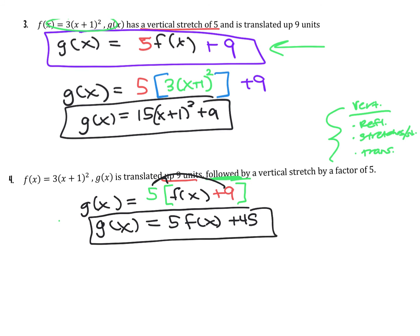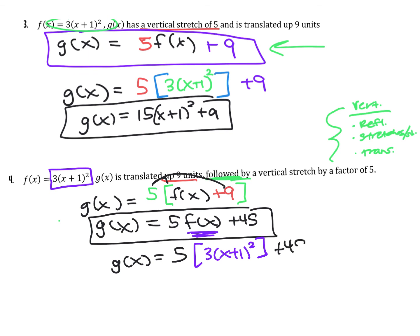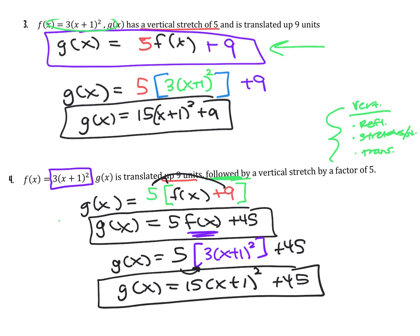In terms of how that impacts the function, it doesn't change the process. This whole thing still gets plugged in for f of x — it's still f of x, not f of x plus 2, so we don't worry about changing what we plug in for x. Everything else stays the same: substitute in 3 times (x plus 1) squared, the 45 stays, and multiplying 5 by 3 gives 15 times (x plus 1) squared plus 45. See how that order and 'followed by' totally change the problem — if you translate and then stretch, it's 45 instead of 9: a significant difference.